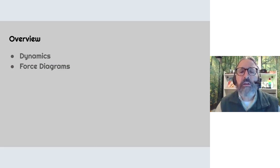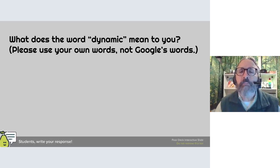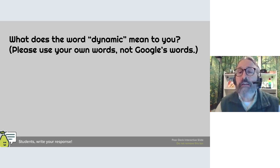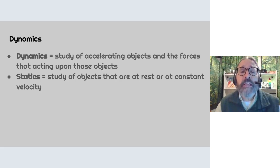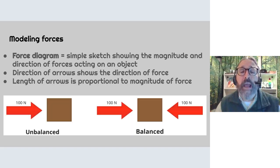Let's take a quick look at dynamics and force diagrams. What does dynamic mean to you? Dynamic usually means something exciting or energetic. In science, dynamics is the study of accelerating objects and the forces acting upon those objects. Statics is the study of objects that are at rest or moving at constant velocity — those are balanced forces.